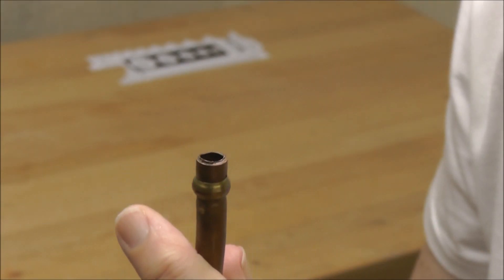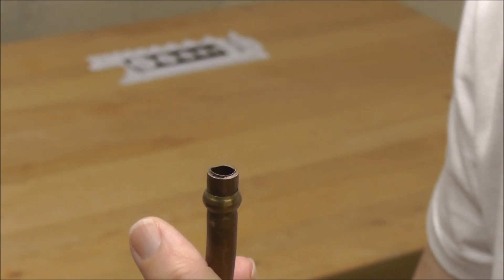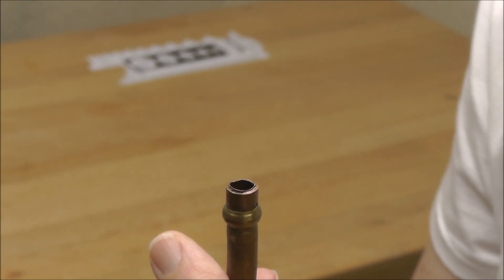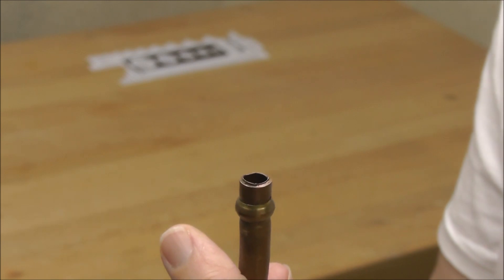Now, how do you determine what size compression nut and ferrule you need? Is it measured like natural pipe thread? No, it isn't at all.